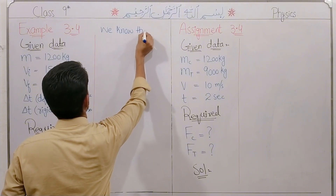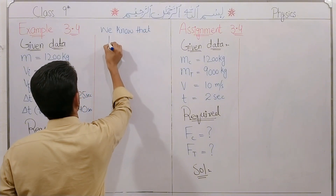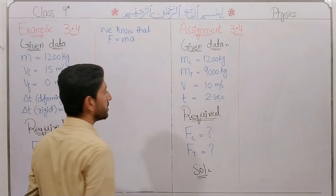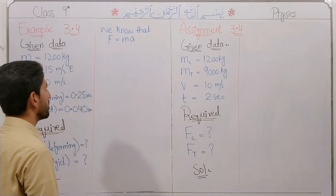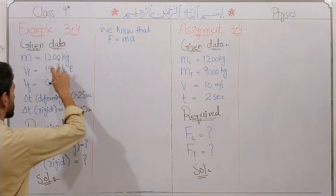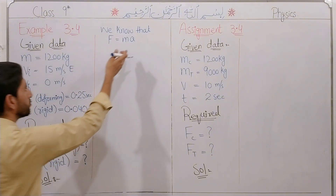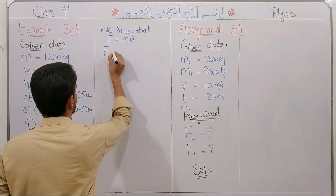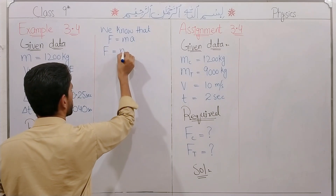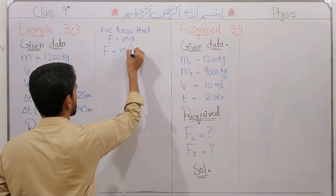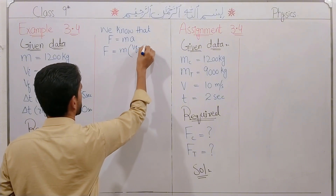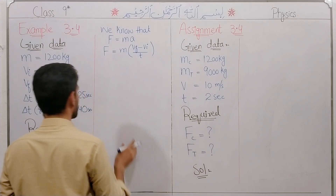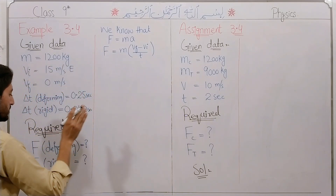F is equal to ma, from Newton's second law. The force is mass times acceleration. The acceleration from the first equation of motion is the final velocity minus the initial velocity divided by time.